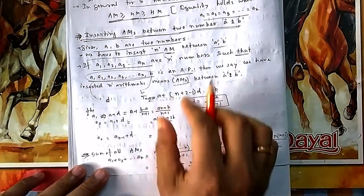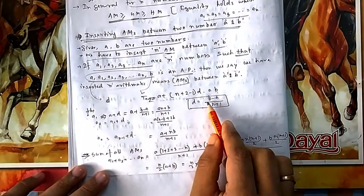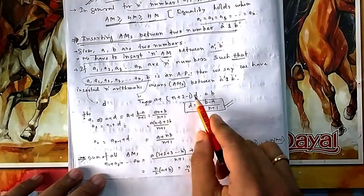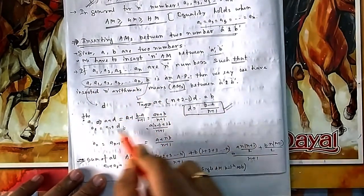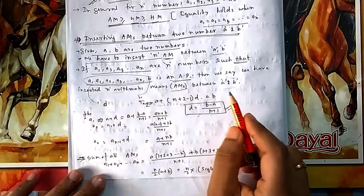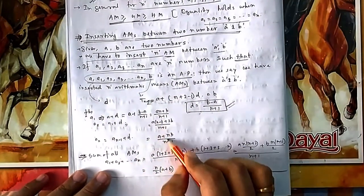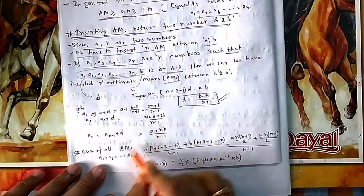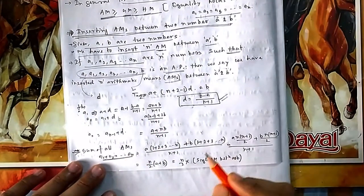This is just to show the proof — no need to remember this formula. Once you know how to calculate d, just solve it as an AP. Find d, then write the terms one by one. Now, let's look at the sum of all n AMs we have inserted.